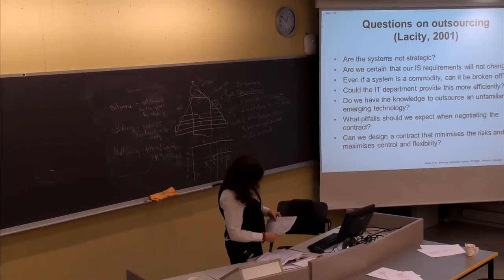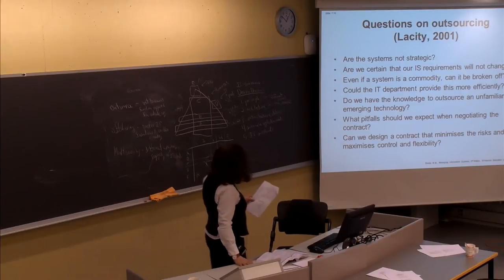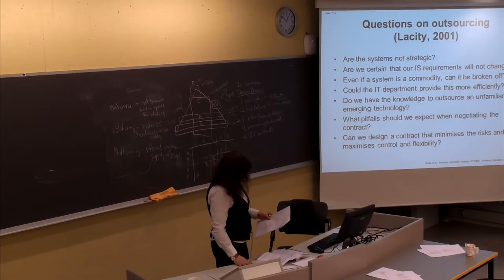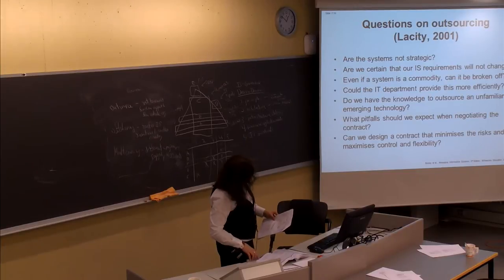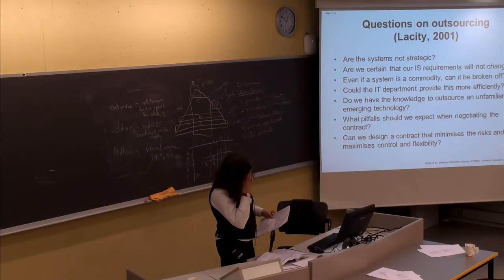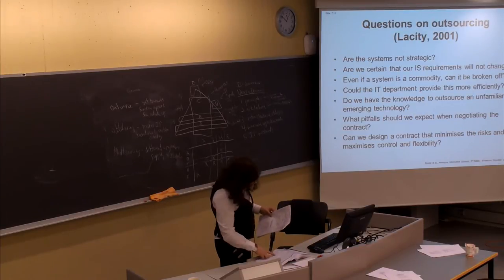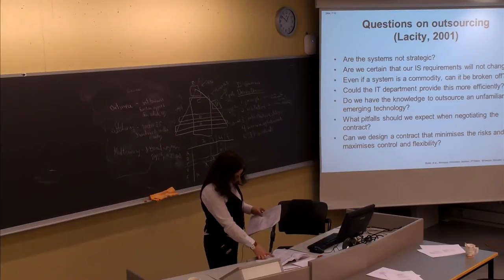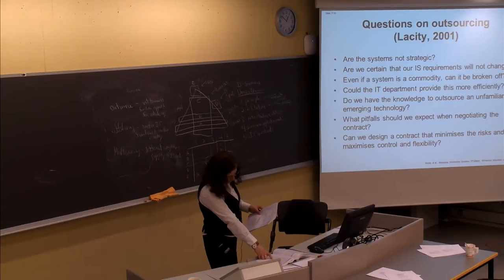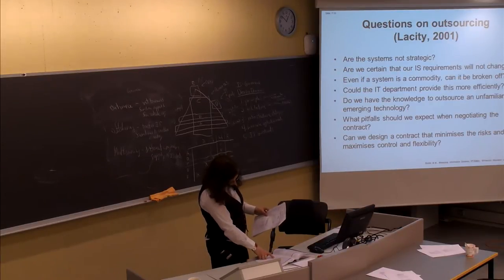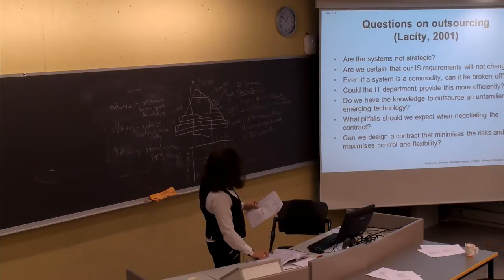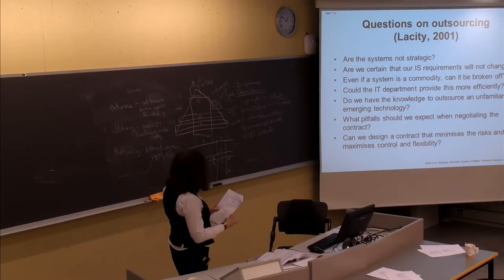On page 195, they discuss the issues of IS governance in outsourcing, including quality measurement and management, preparation and management of change, and related governance requirements.